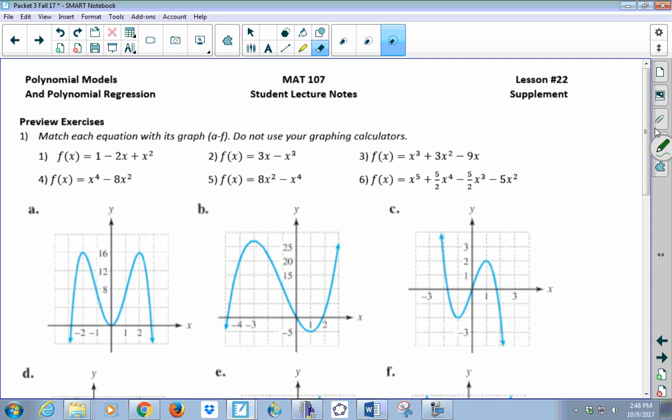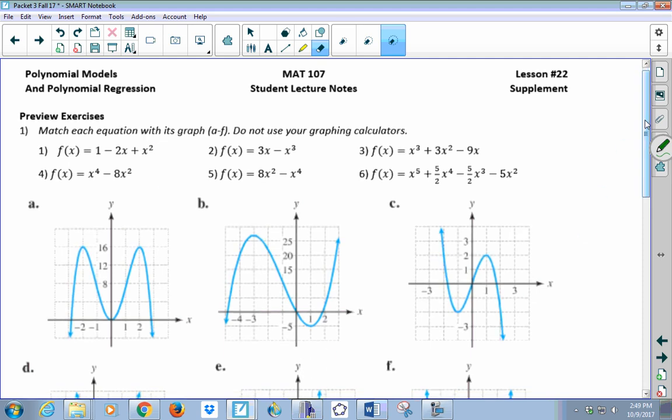Some of you may have started by looking at each graph and trying to find the equation, or some of you might have started directly with equation number one and tried to find its graph. It really doesn't matter how you start, but there were some important ideas that are going to help you identify which equation and which graph go together. Remember we talked about even and odd degree polynomials. That's going to be an important idea, and in particular with even and odd degree polynomials, we talked about the end behavior of each one.